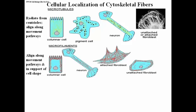To the right of the neuron are an attached and an unattached fibroblast. Microfilaments have a very different organization depending on whether the cell is attached to a surface — called a substratum — or suspended in medium. An unattached fibroblast takes on a roughly oval or spherical shape, and like the columnar cell, the actin is organized largely in the cortex, just under the cell membrane, forming a cortical ring of microfilaments that gives the cell its rounded shape.